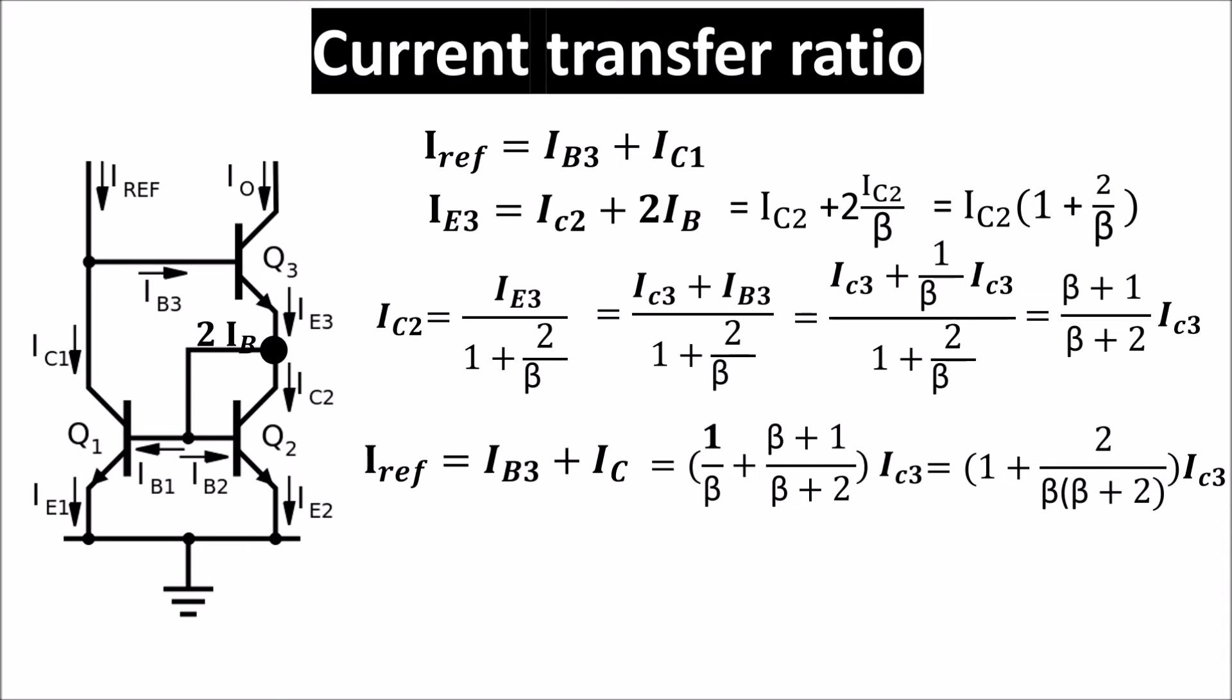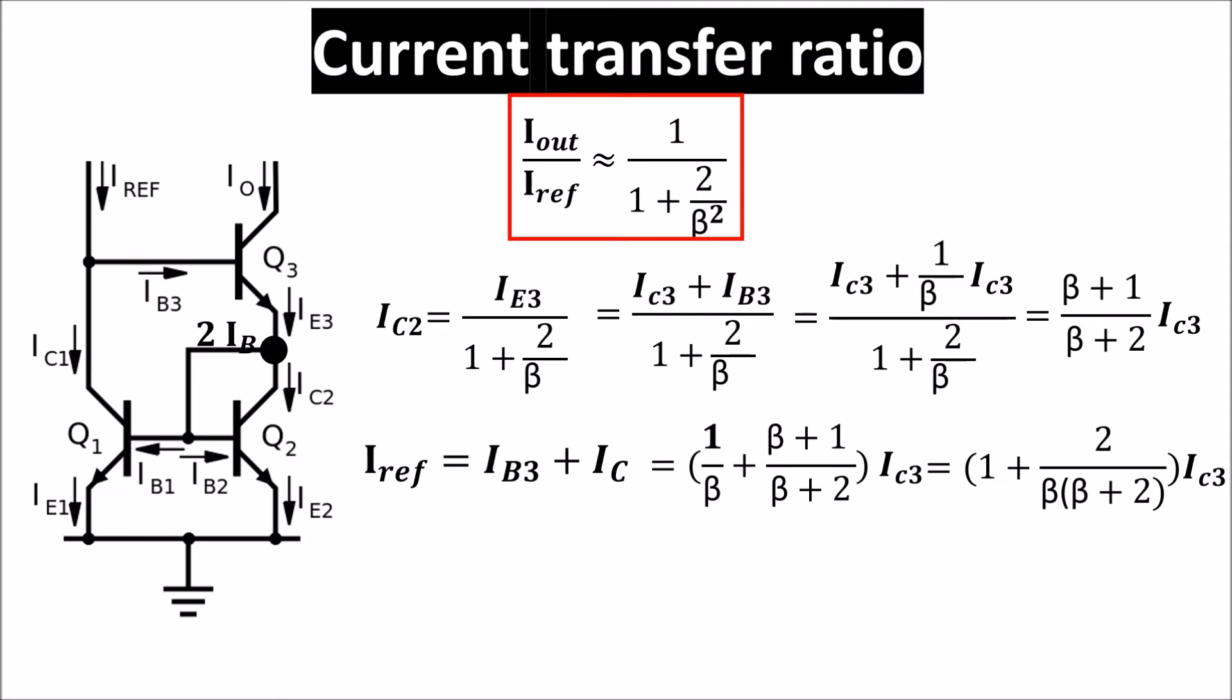So the current transfer ratio, which is IE3 divided by IRF, is more or less this. This transfer ratio is much better than that of the basic current mirror, because the error is divided by the square of beta.